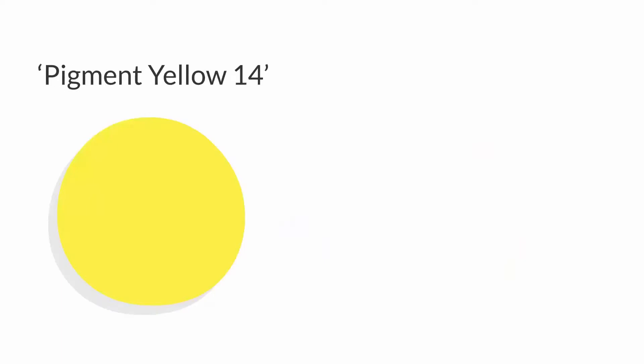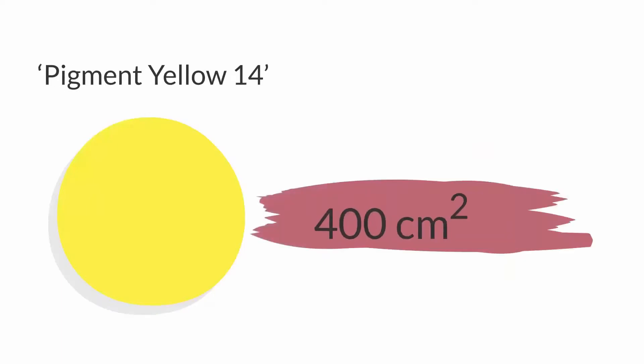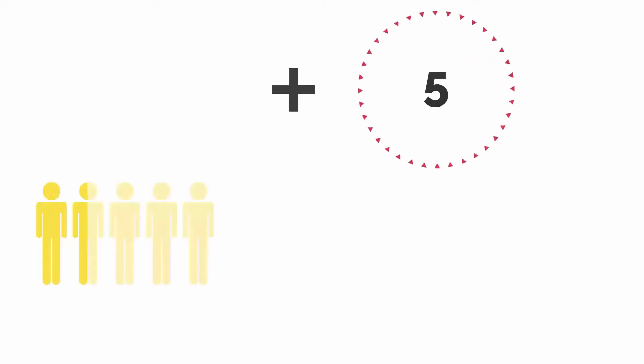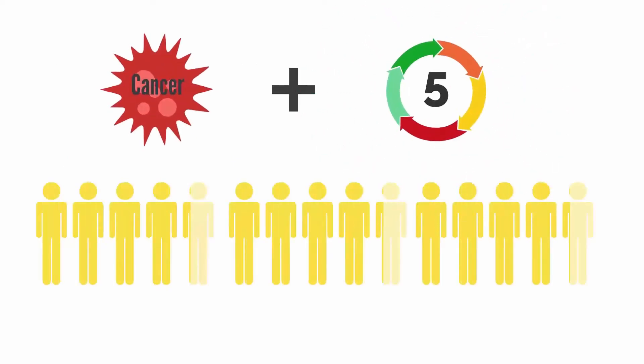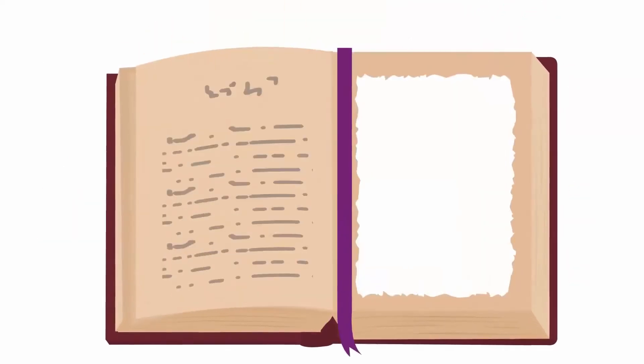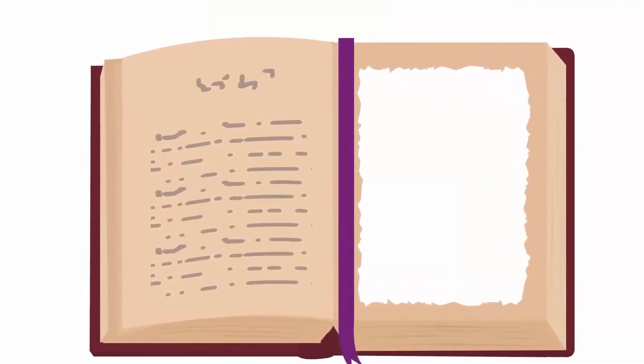Overall, they estimated that pigment yellow 14 present over a tattooed area of about 400 cm² adds about 5 extra cancer cases per 10,000 people. The section concluded that much work is needed to reduce the number of new tattoo-related cases.